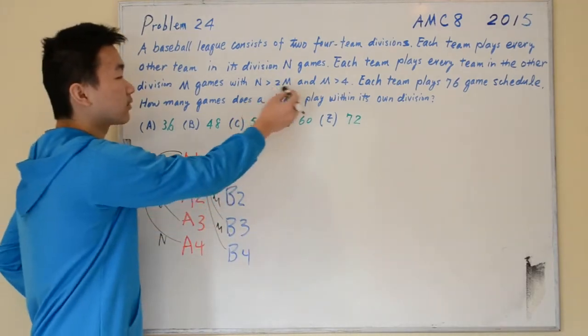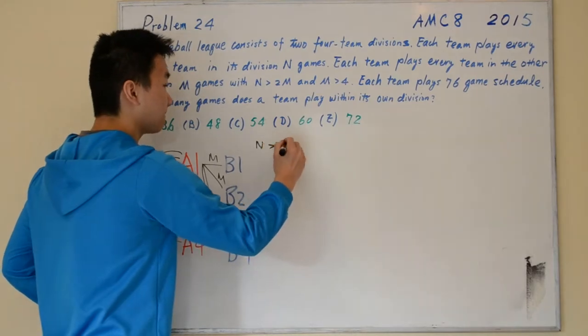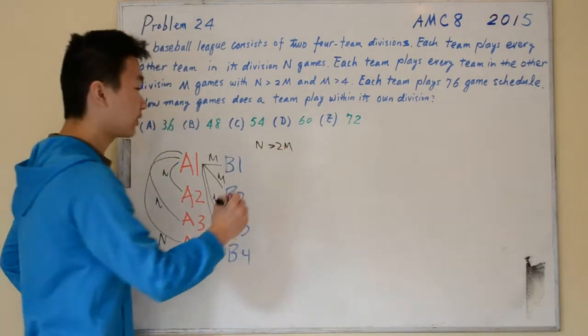So N is greater than 2M. Let's write that down: N is greater than 2M, and M is greater than 4.